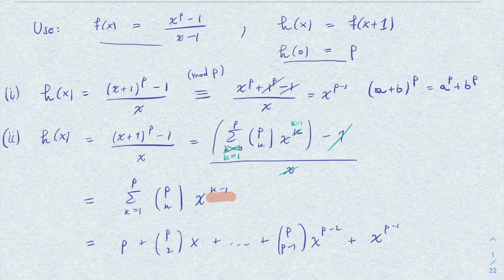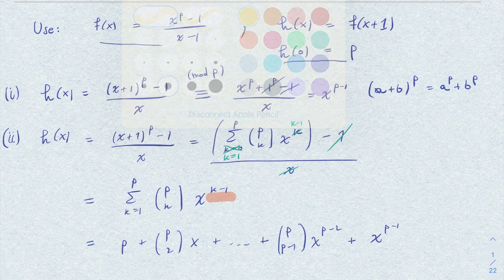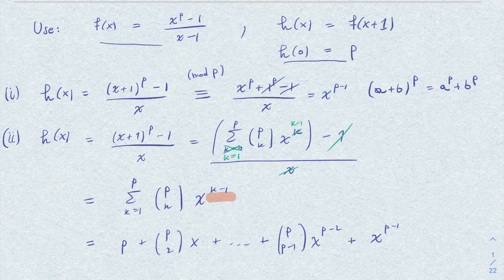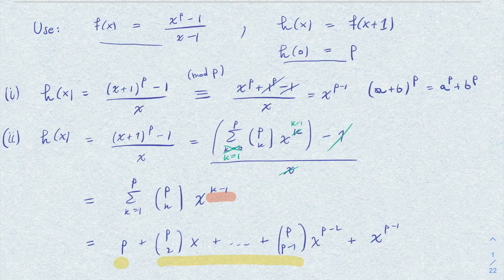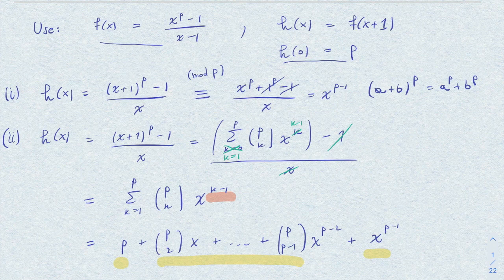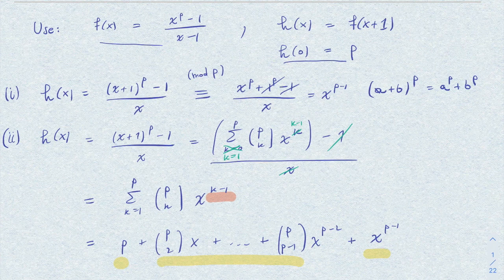And here you clearly see that Eisenstein criterion applies here. The constant term is divisible by p and not by p squared, and all the other coefficients are divisible by p except the leading coefficient. So we can conclude that h is irreducible by applying Eisenstein, and therefore f as well.